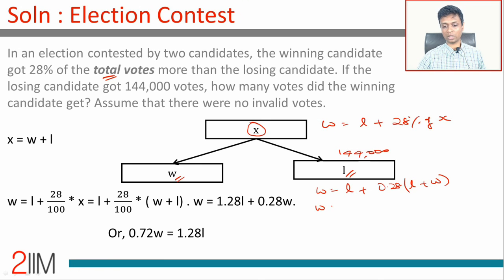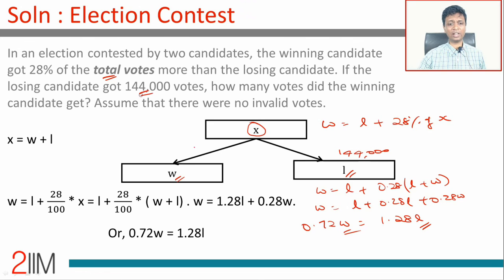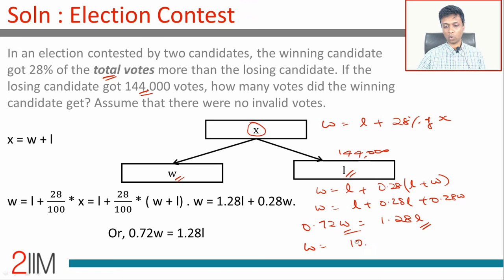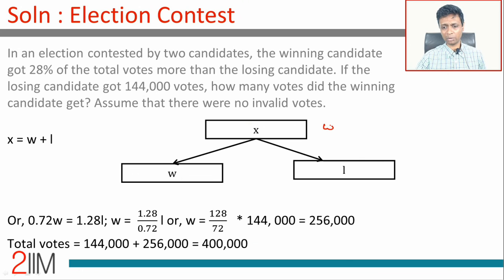Remember, in the previous question it was L plus 28% of L; now it's L plus 28% of X. We know X is W plus L, so: W = L + 0.28(W + L), which gives W = L + 0.28L + 0.28W, so 0.72W = 1.28L. Therefore W = (128/72) × L = (128/72) × 144,000, which equals 256,000.